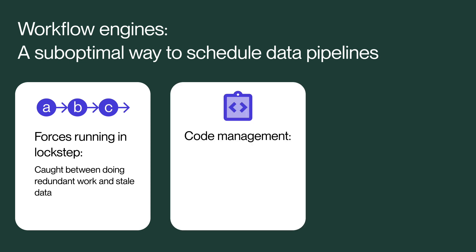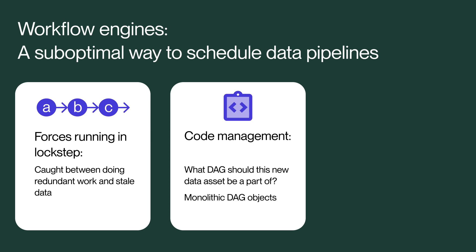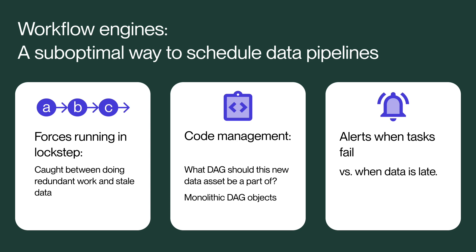A second related friction with workflow-based orchestration is that every time you add an asset, you have to find a DAG to put it in to get it scheduled. This means you have to worry about DAGs getting too large and unwieldy, or at the other extreme, too small and fragmented — a code management problem. Last, you get alerted when your task fails, not when your data is out of date, which is often what you actually care about. If the system can retry and self-correct before the deadline, then nobody needs to get paged.